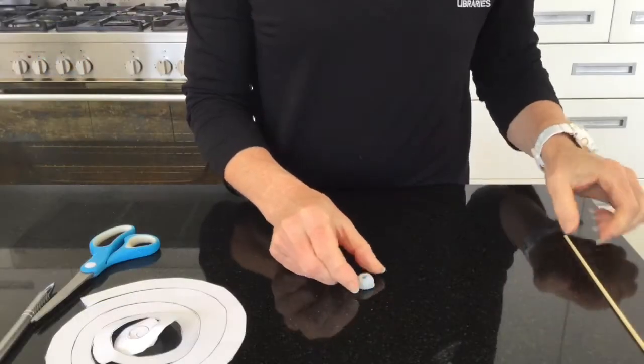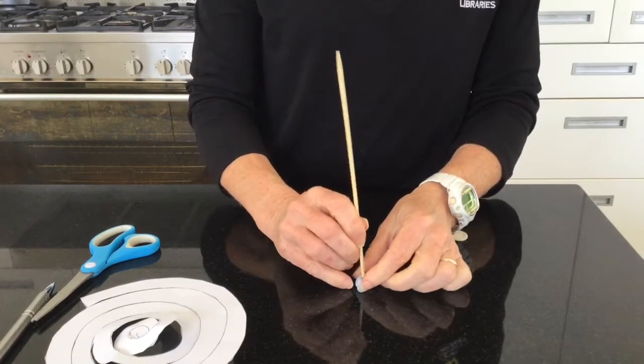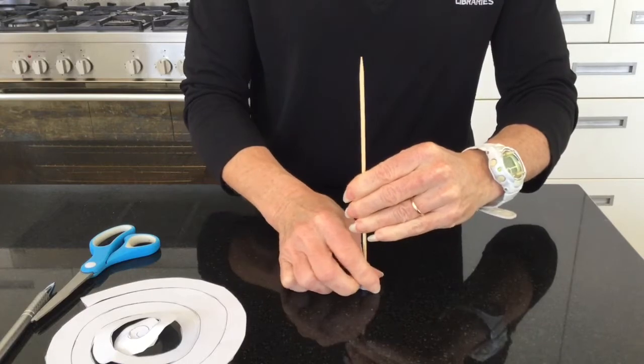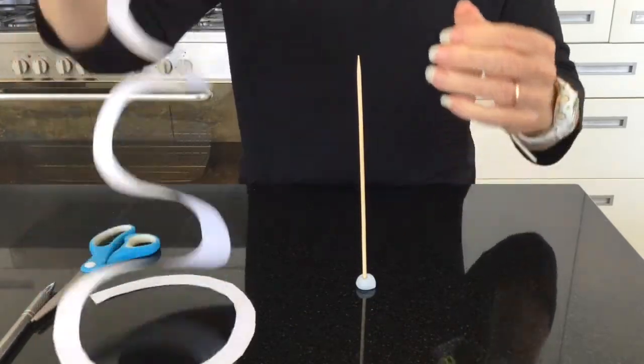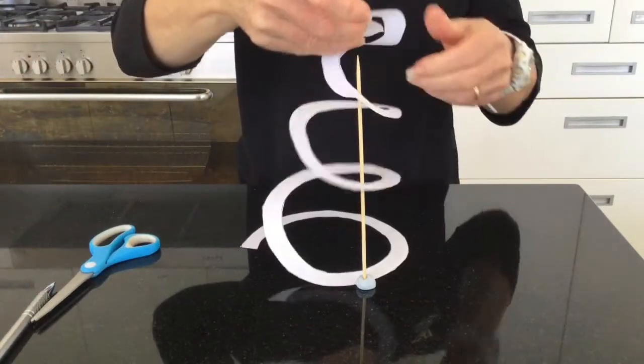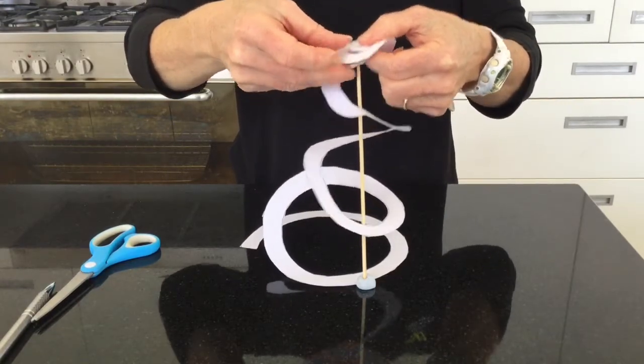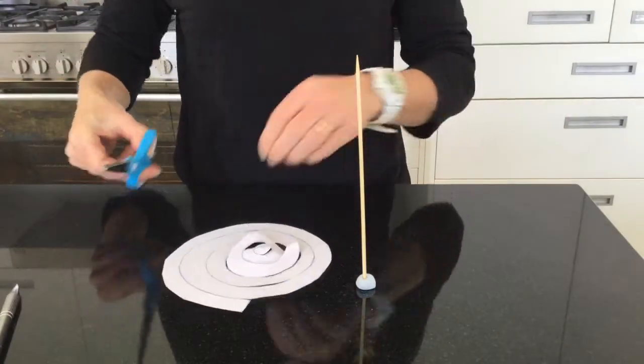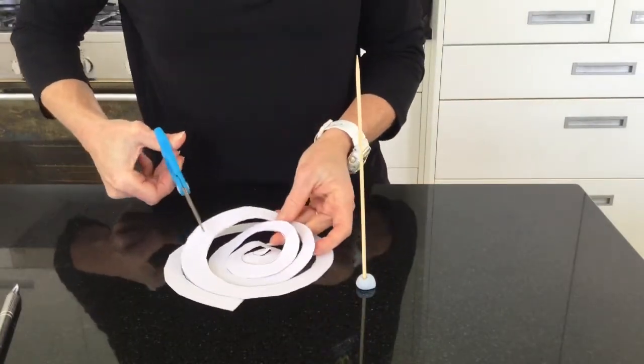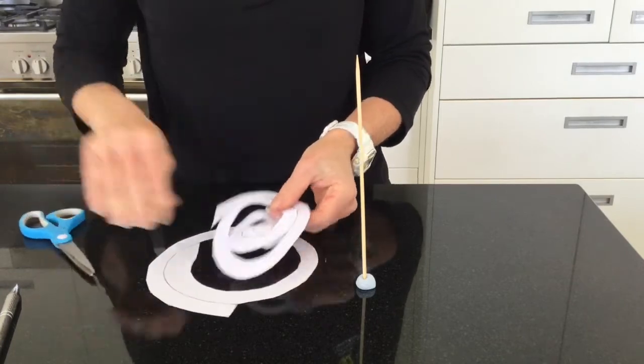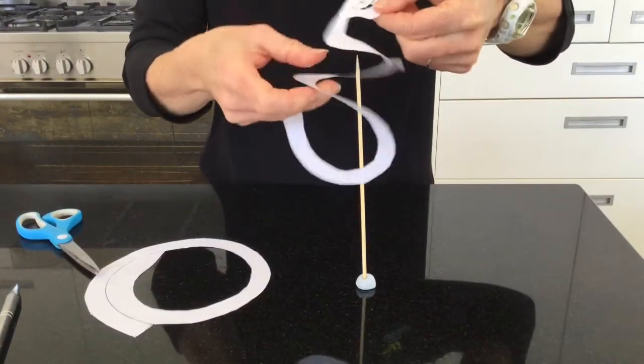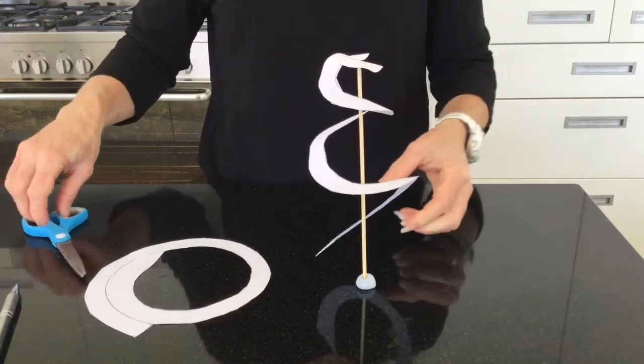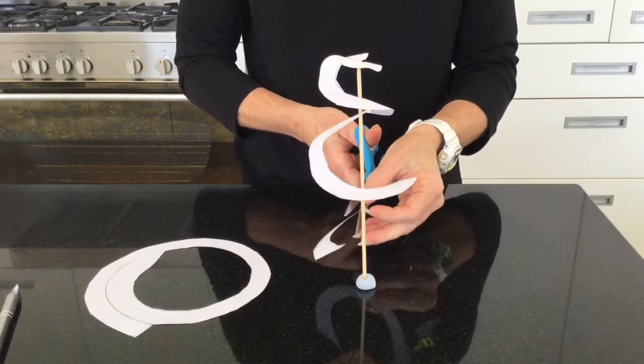So now you want to place your skewer in the little ball that you've got. Just going to see how big. This is quite long, so I'm going to make that a little bit shorter now. Just cut some of that off. Just cut a little bit more.